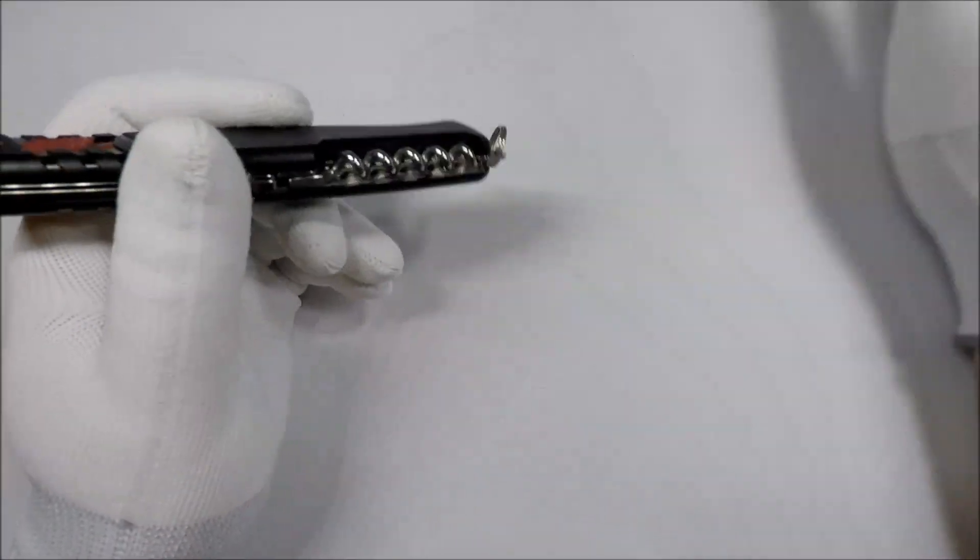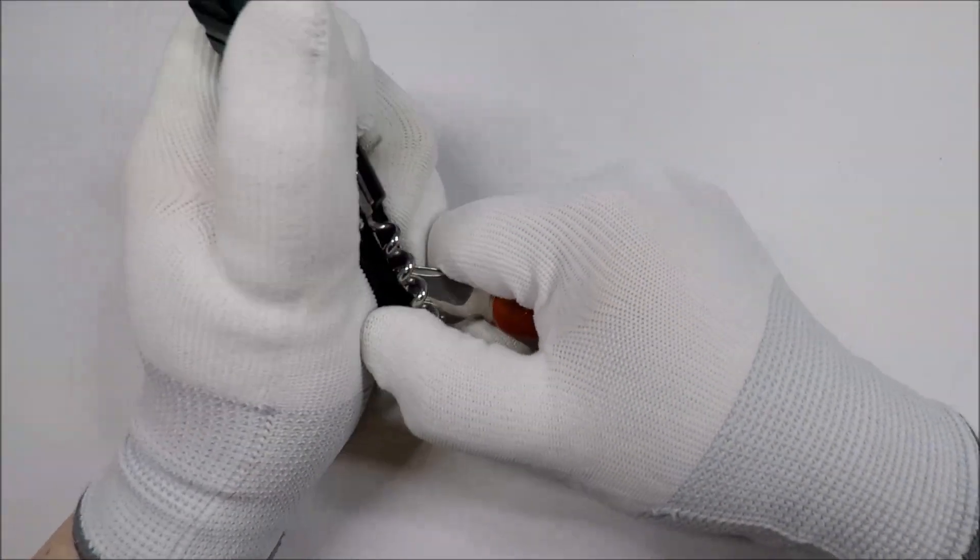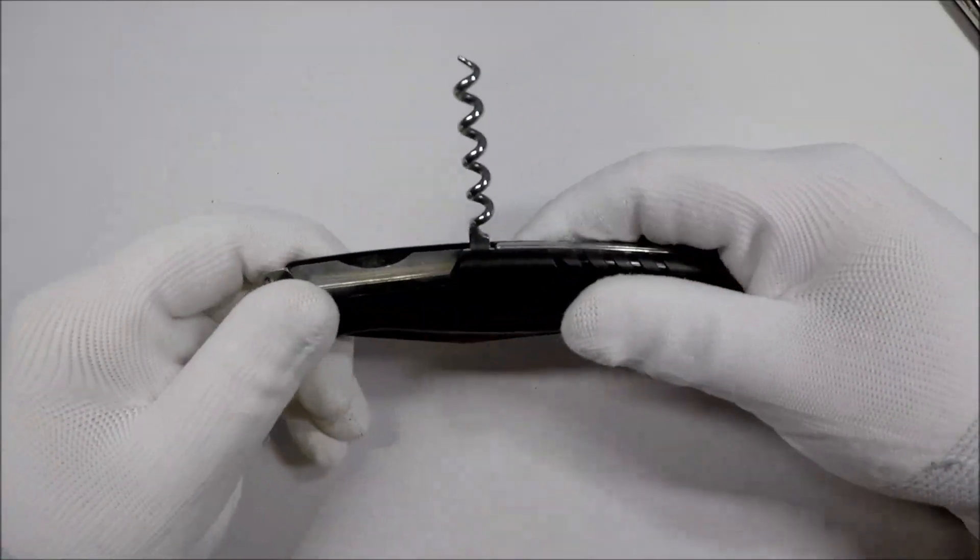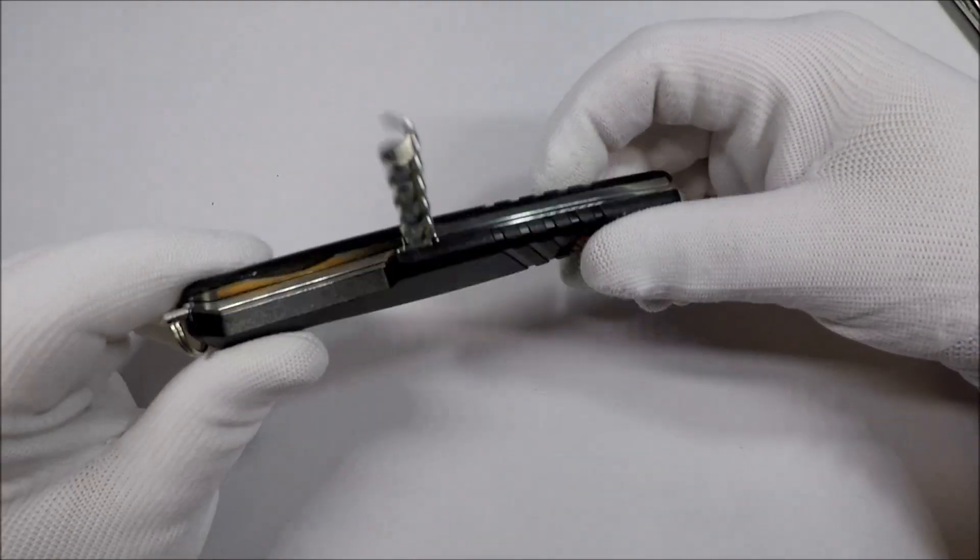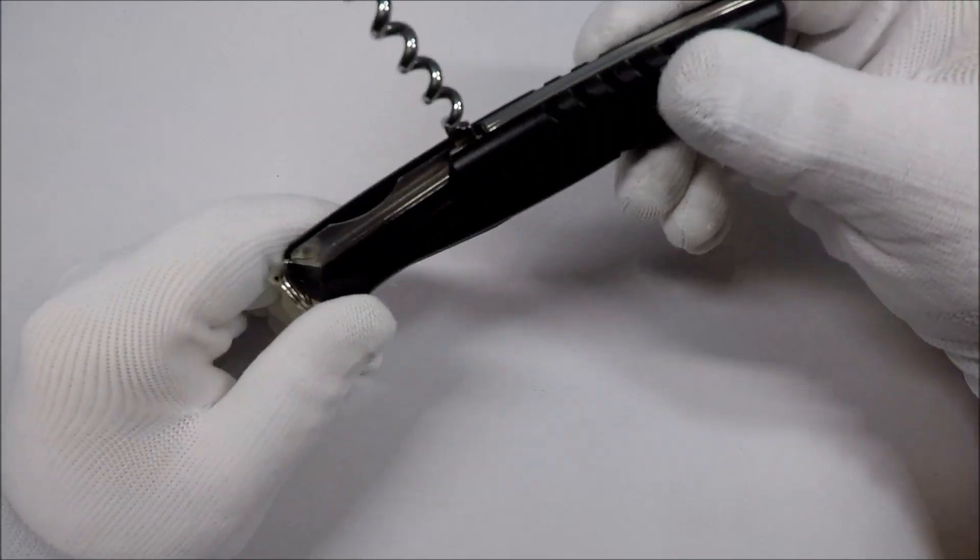Now you also get the mysterious corkscrew. It should be a Phillips head. And I am really stumped by this one.